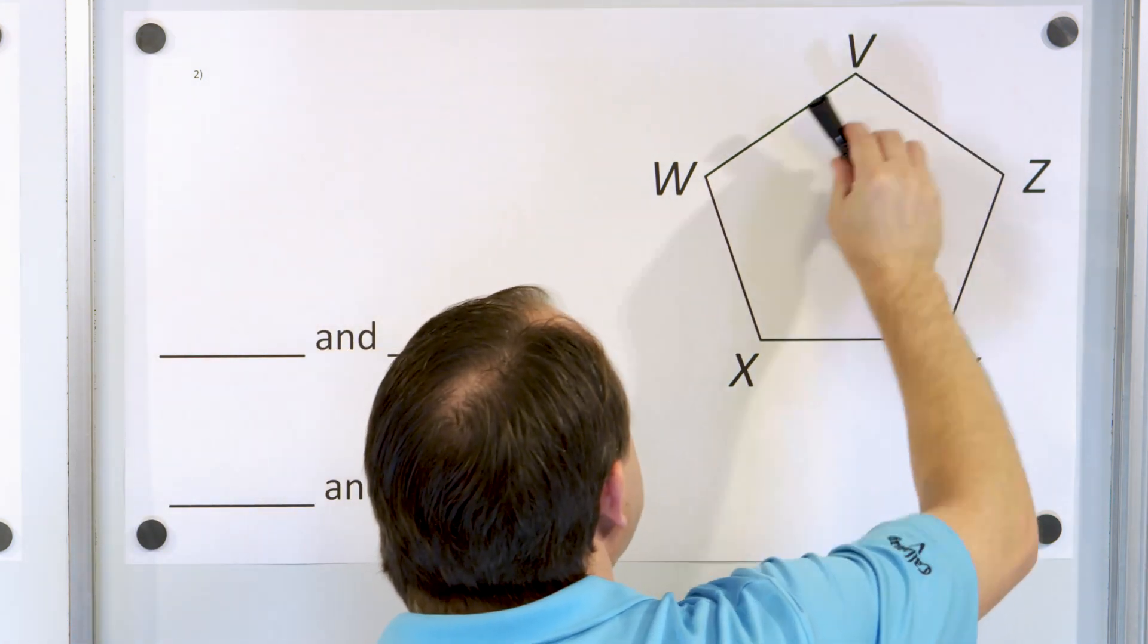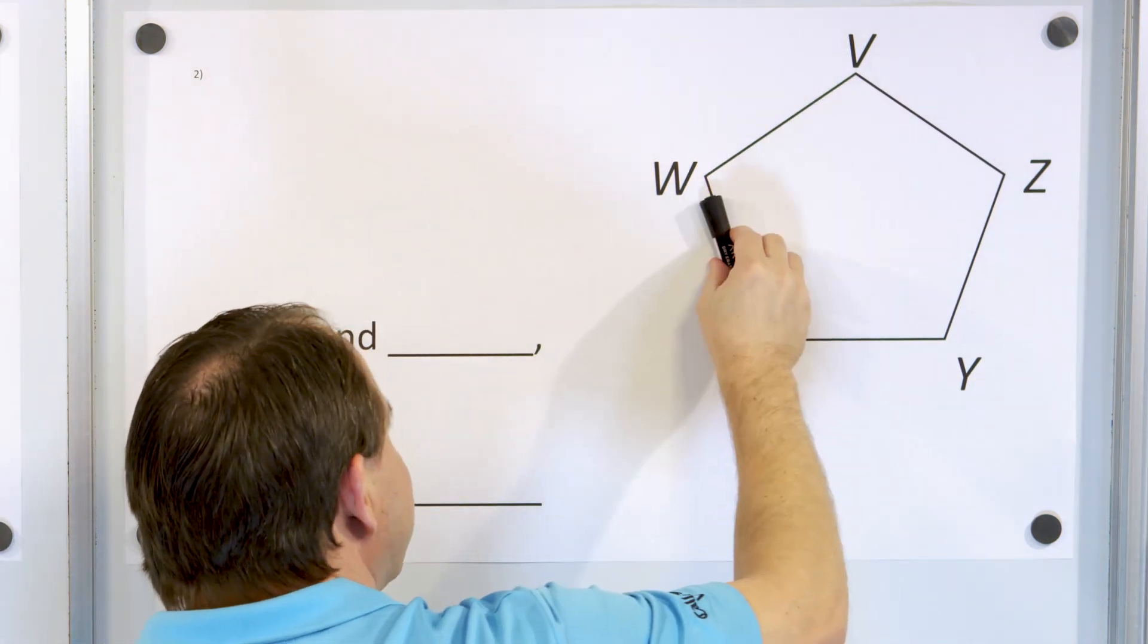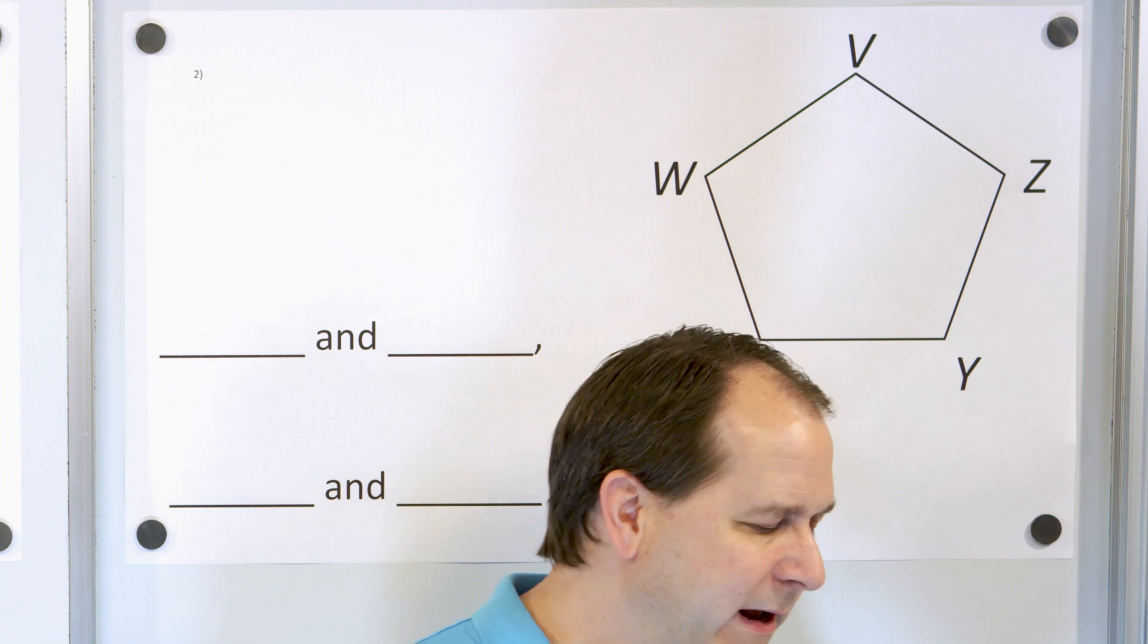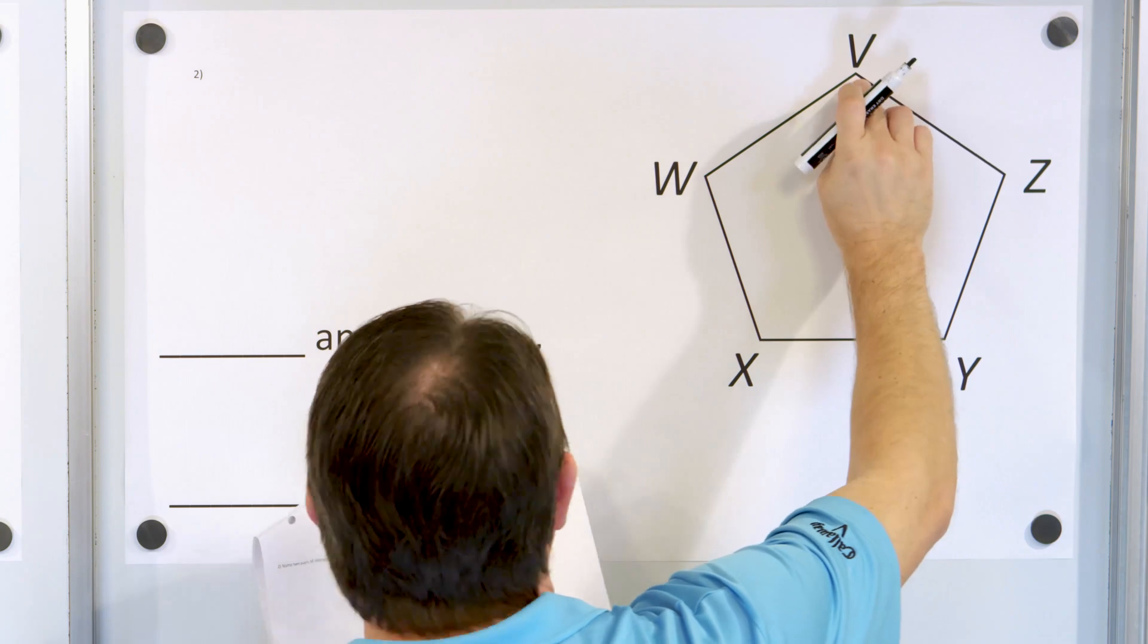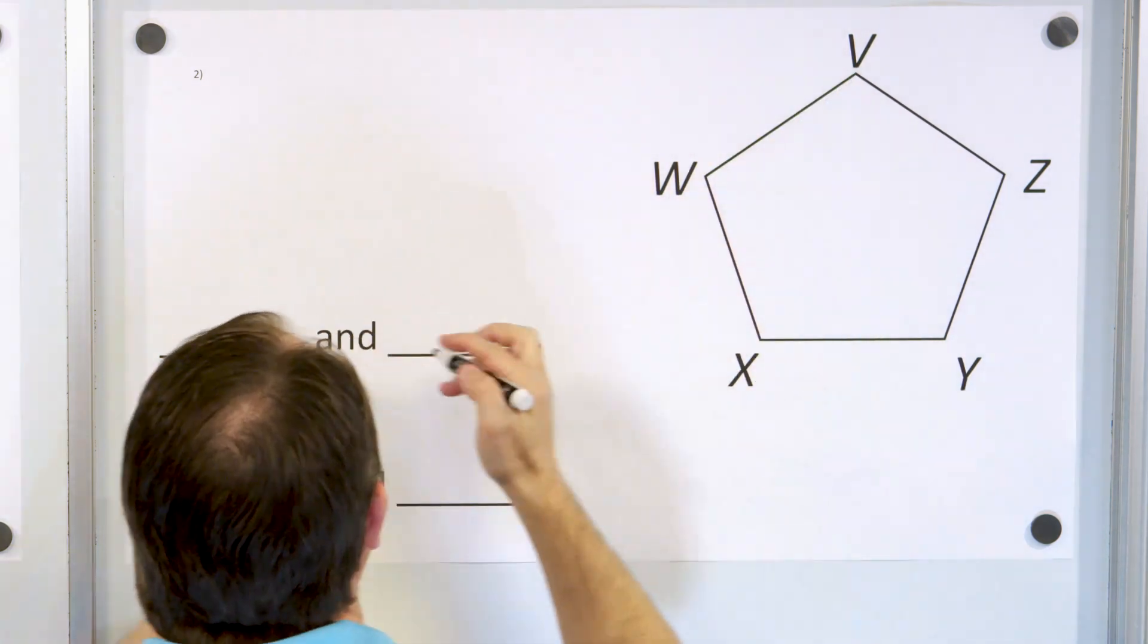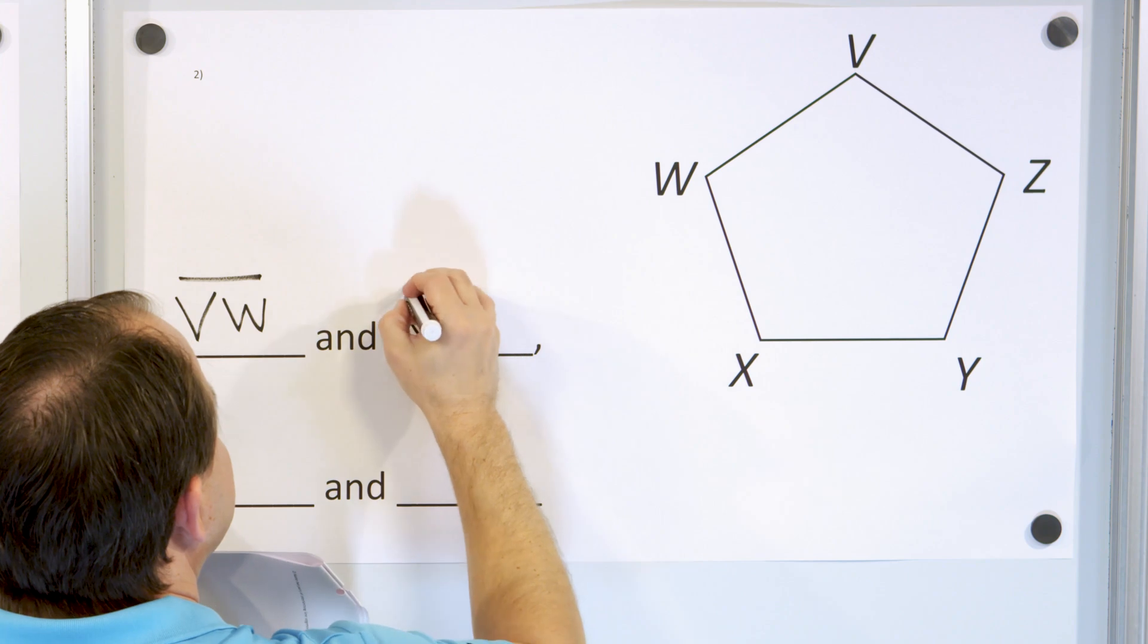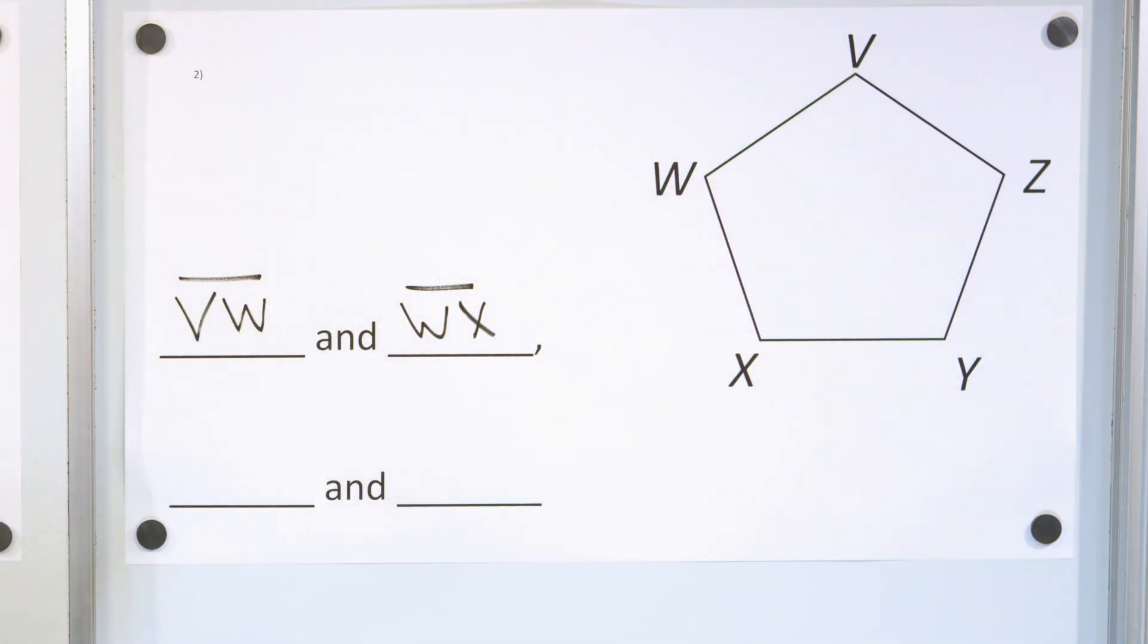We can just start looking at this. This line segment intersects with this one. This line segment intersects with this one. Basically all of the pairs of lines all the way around, they intersect at the points. So we just have to write two pairs now. Let's take a look at VW, and that intersects with WX, so VW segment, WX segment. Those are intersecting line segments.